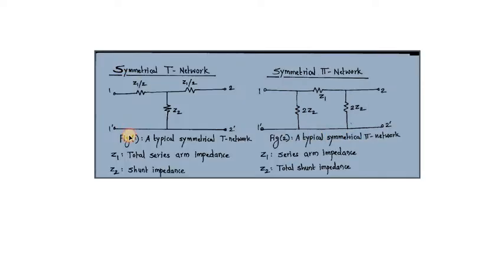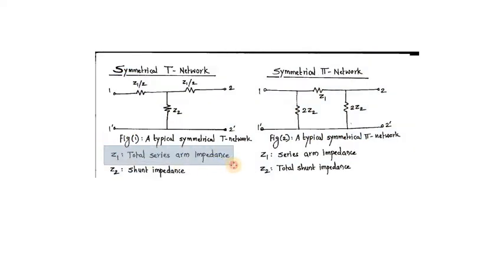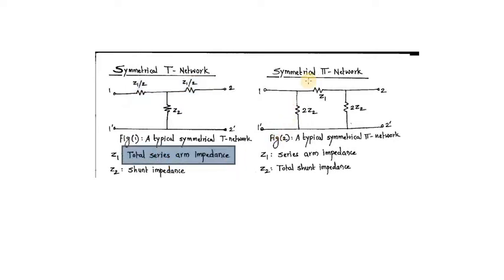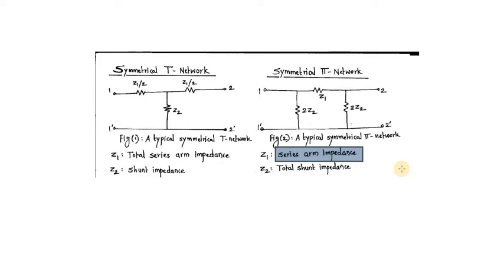Here, the Z1 impedance is referred to as series arm impedance. In case of the symmetrical T network, the series arm impedance is actually made up of two impedances each of Z1 by 2. That is why we use the word total series arm impedance. Whereas in the symmetrical pi network, the series arm impedance consists of a single impedance of value Z1, so we simply refer to it as series arm impedance.